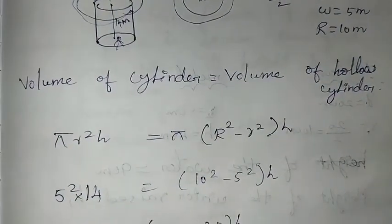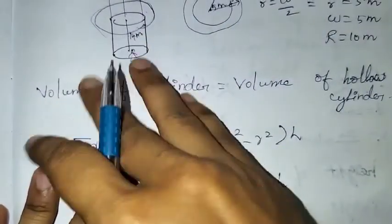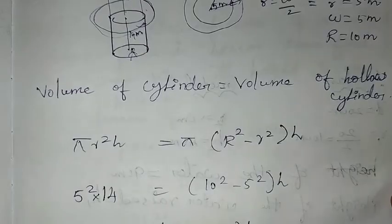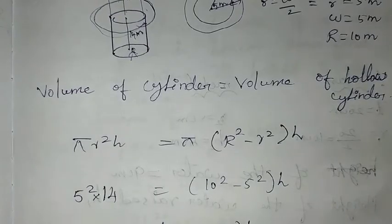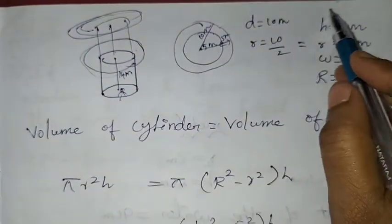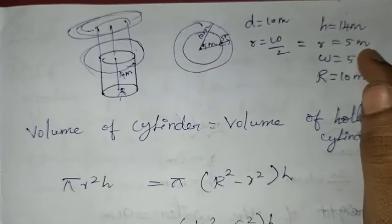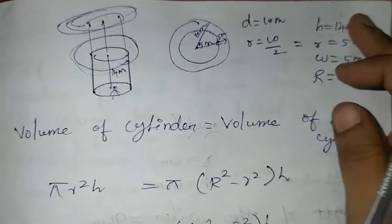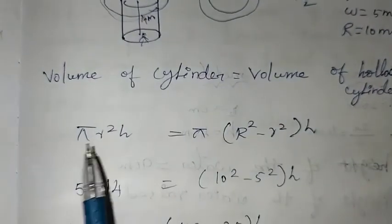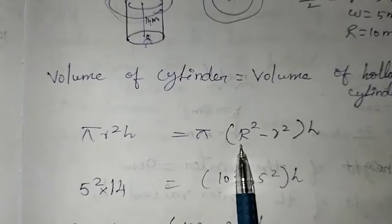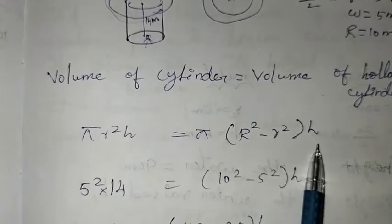It is understood — the two volumes are equal. Now let's compare and find the hollow cylinder height. The volume of the cylinder is π r² h. The volume of the hollow cylinder is π (R² − r²) H. We can cancel π on both sides.